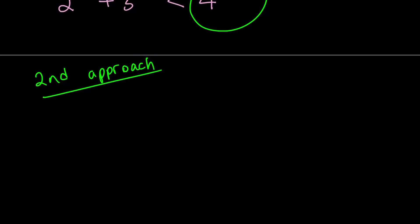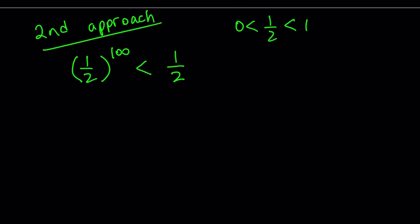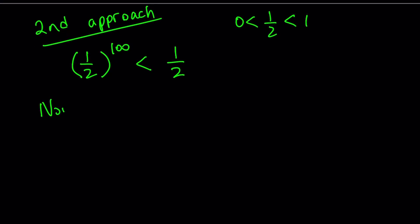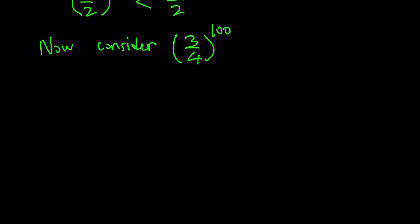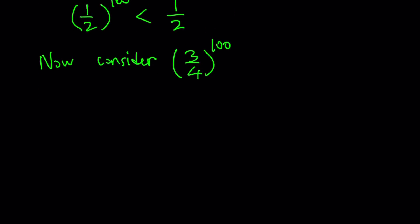So I will start with 1 half to the power of 100. And since 1 half is between 0 and 1, it's a fraction — we can write it as a decimal, 0.5. When you raise it to a higher power, the number gets smaller. So we can safely say that 1 half to the power of 100 is going to be less than 1 half. Now let's consider another number: 3 fourths to the power of 100. You're going to see later on why I'm using these numbers because I'll put it together in a nice way.